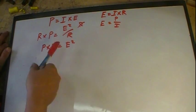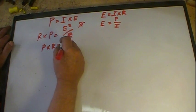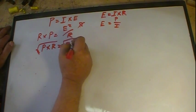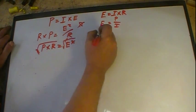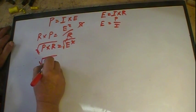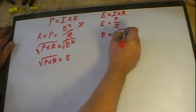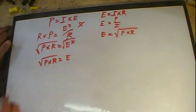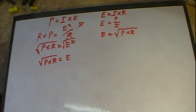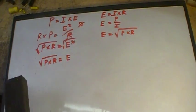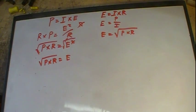So the three voltage formulas are: E = I×R (standard Ohm's Law), E = P/I (knowing wattage and current), and E = √(P×R) (knowing wattage and resistance). That's how you derive them.